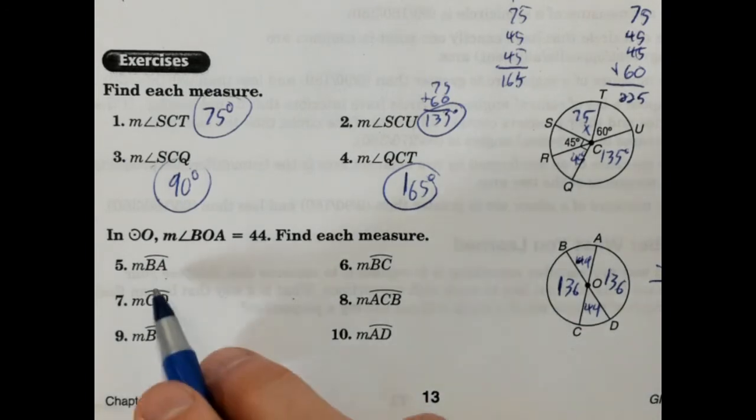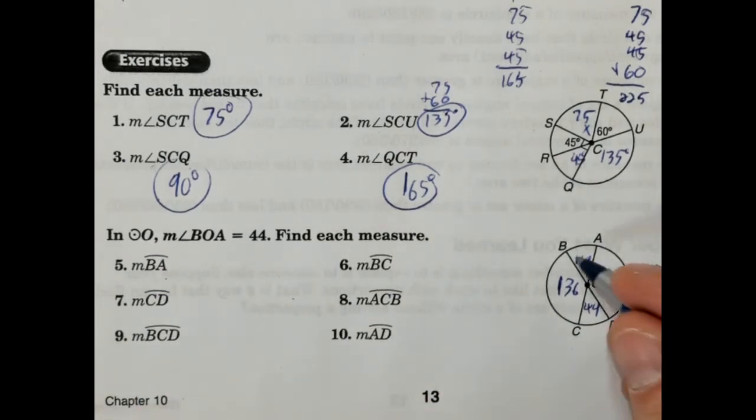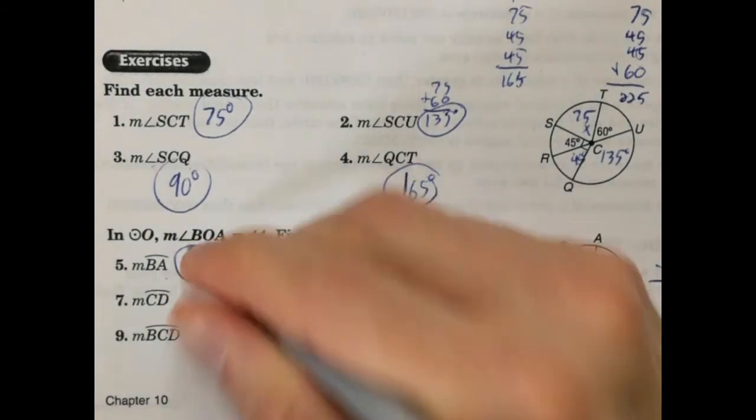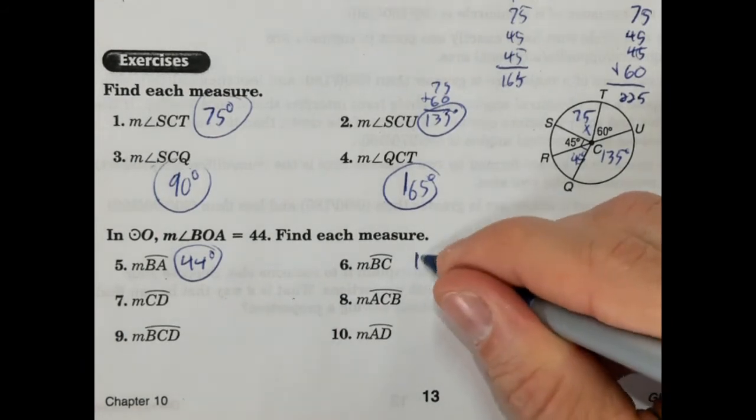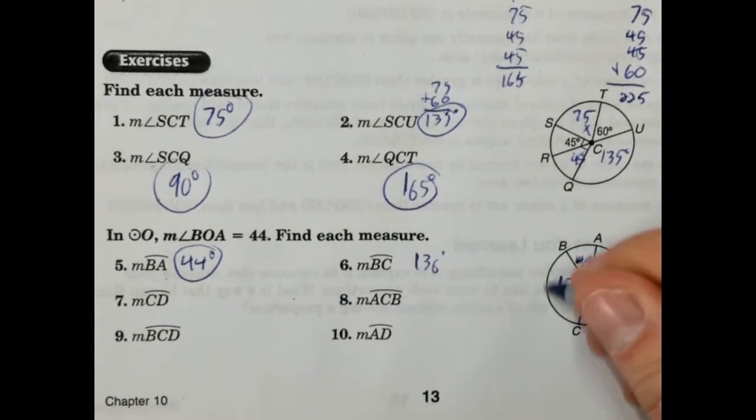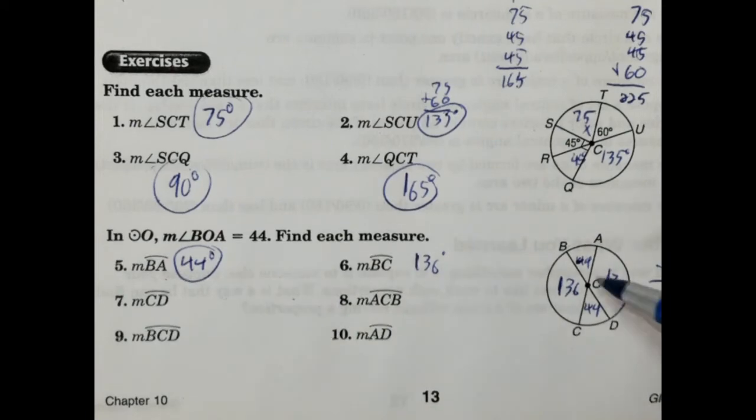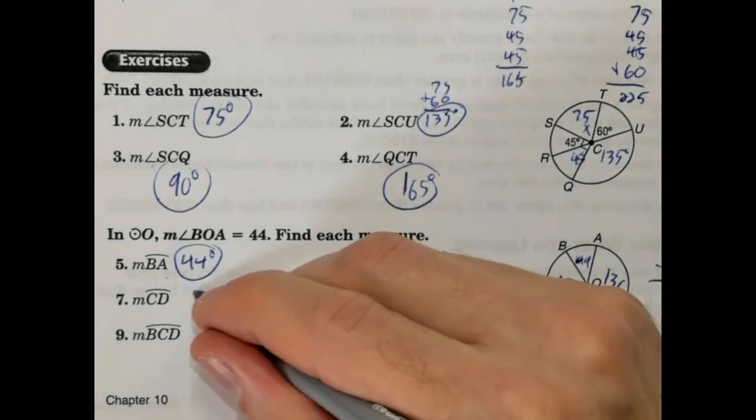Now we need to find out what corresponds to what. Arc BA is this one, that corresponds to 44 degrees. Arc BC is 136 degrees. CD, that's going to be 44 degrees.